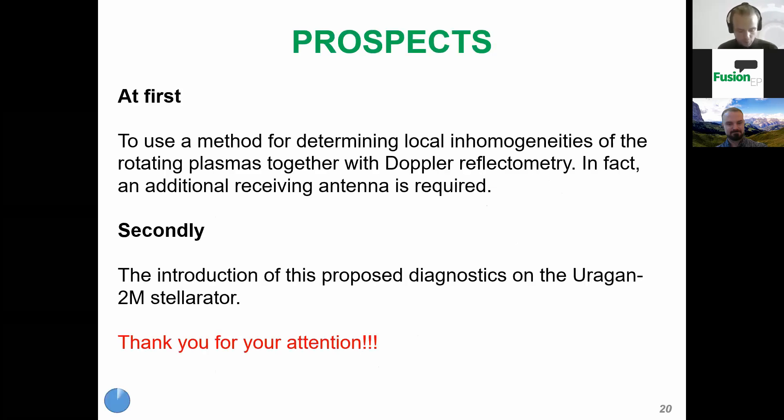Prospects. At first, to use a method for determining local inhomogeneities of the rotating plasma together with Doppler reflectometry. In fact, an additional receiving antenna is required. And secondly, the introduction of this proposed diagnostic on the Uragan-2M stellarator. Thank you for your attention.